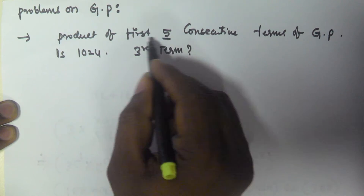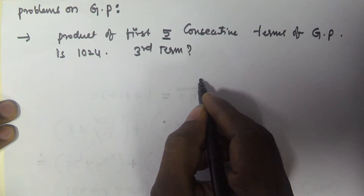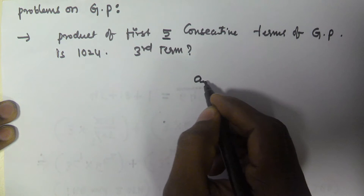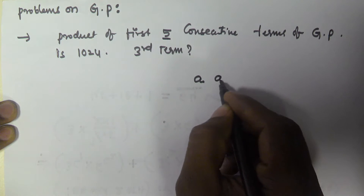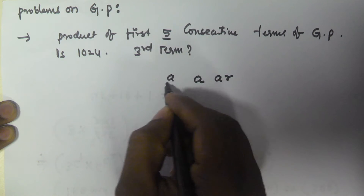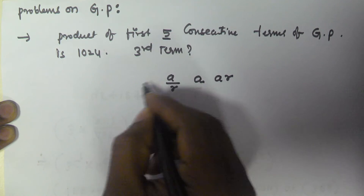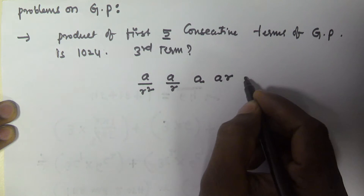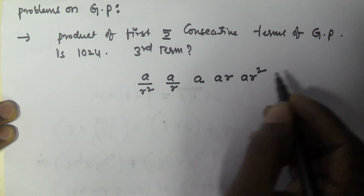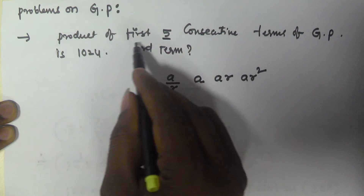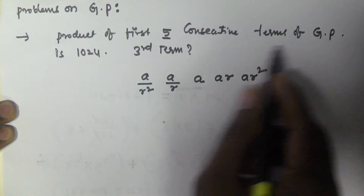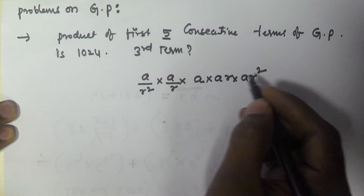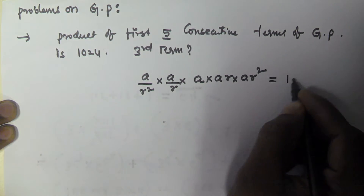Whenever an odd number of consecutive terms are given, we take the middle number as A. The next term is taken as AR, the previous term as A/R, then AR² for the one after, and A/R² for the one before. These are the five terms, and the product of these five consecutive terms is equal to 1024.